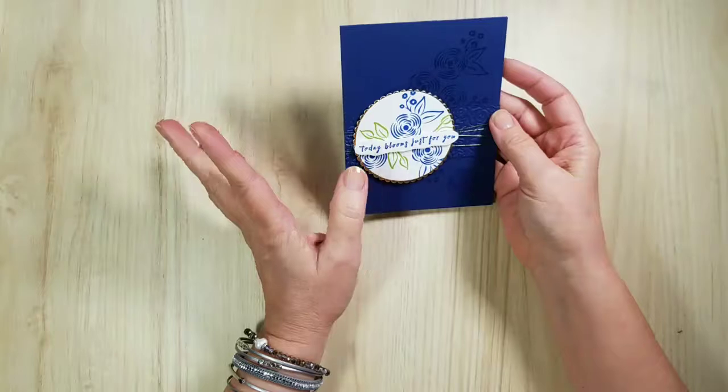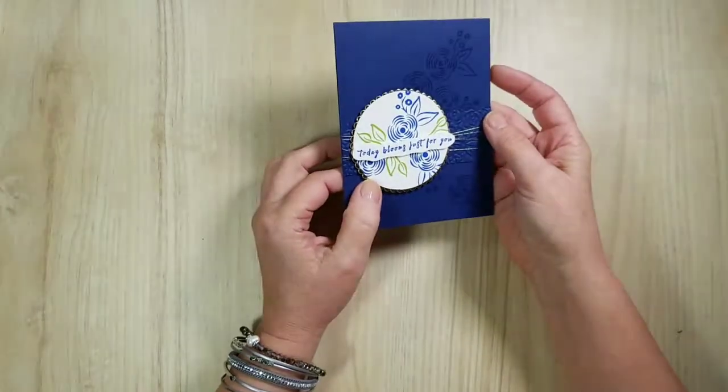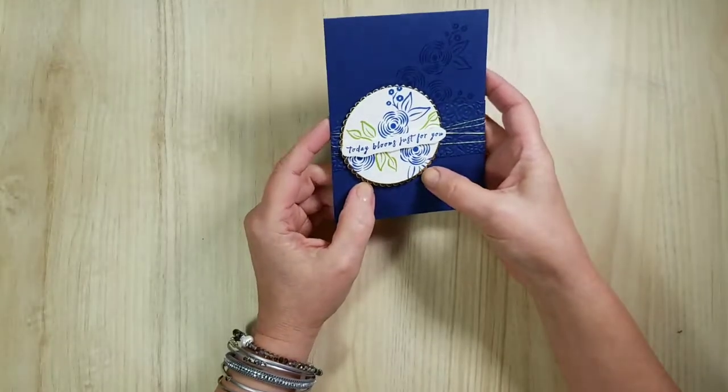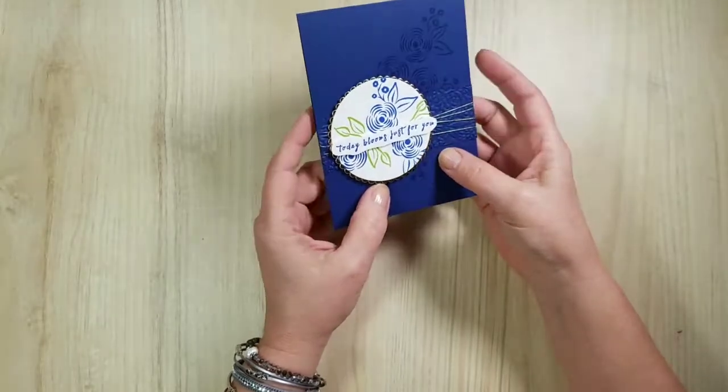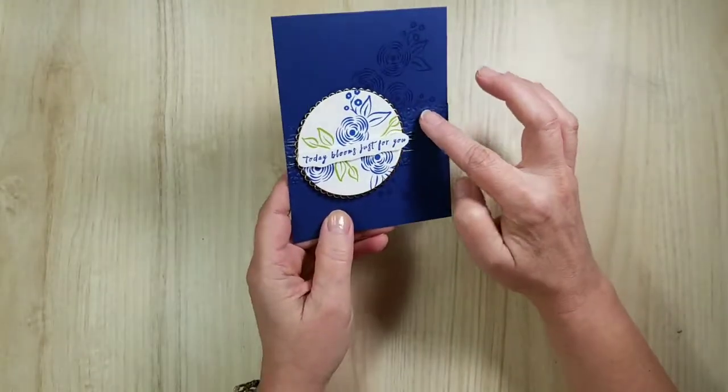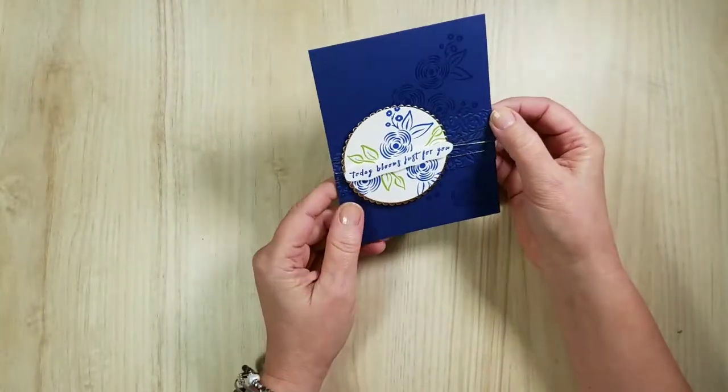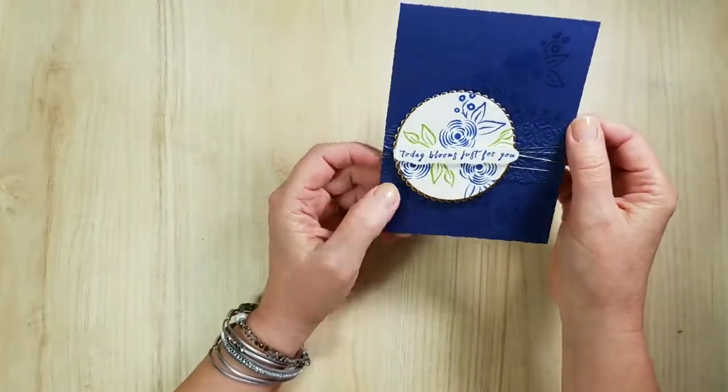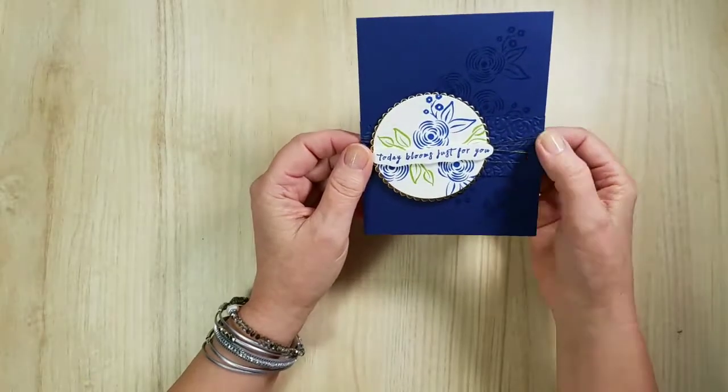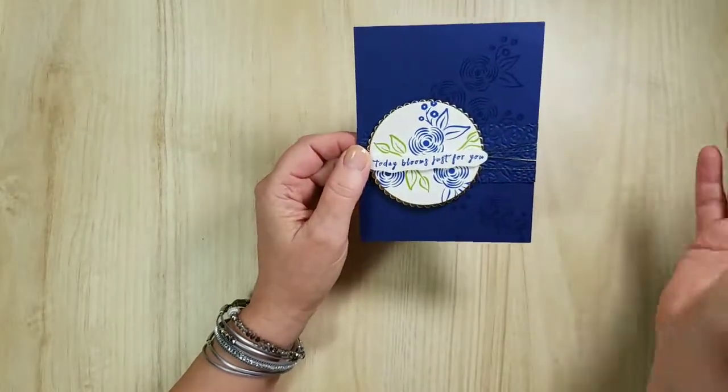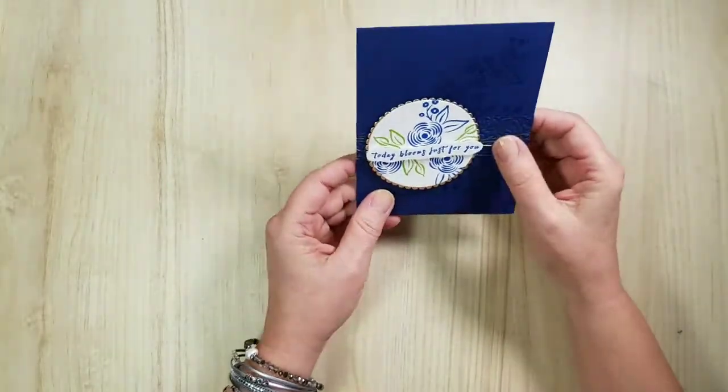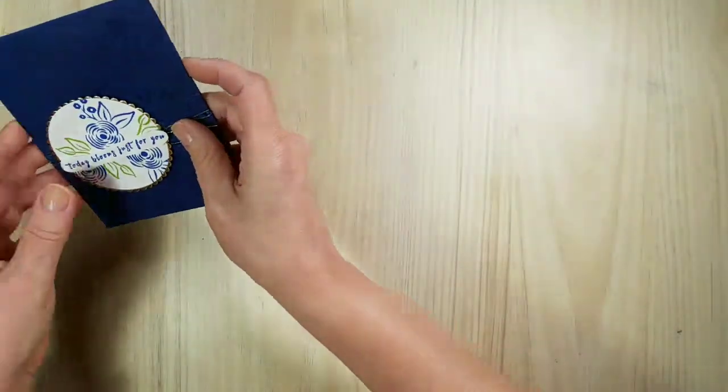Again, this is my quick and easy. Now this did require a big shot, but there's ways around it - different punches you can use and get the same effect. I did a tone on tone, which I rather like. This card is, if I turn it away from the really bright light, maybe this is Night of Navy - just a super color. It lends itself to masculine or feminine. And then you can see our today blooms for you and some other goodies.